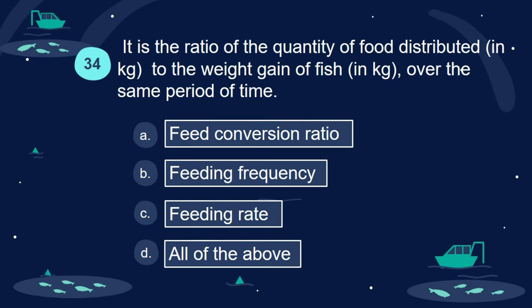Question 34. It is the ratio of the quantity of food distributed (in kg) to the weight gain of fish (in kg) over the same period of time. A. Feed conversion ratio. B. Feeding frequency. C. Feeding rate. D. All of the above.